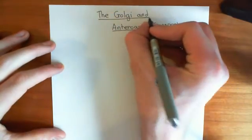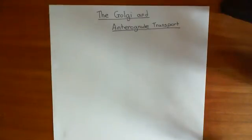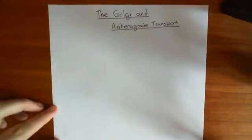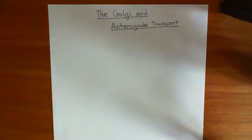The structure of this video is: we're going to begin with a basic overview of the ER and the Golgi. Then we're going to discuss the COP2 protein complex, which stands for the coated protein complex of the second type. Then we're going to talk about how the COP2-coated vesicles bud off from the endoplasmic reticulum, how they move to the Golgi, and then a little discussion about fusion.